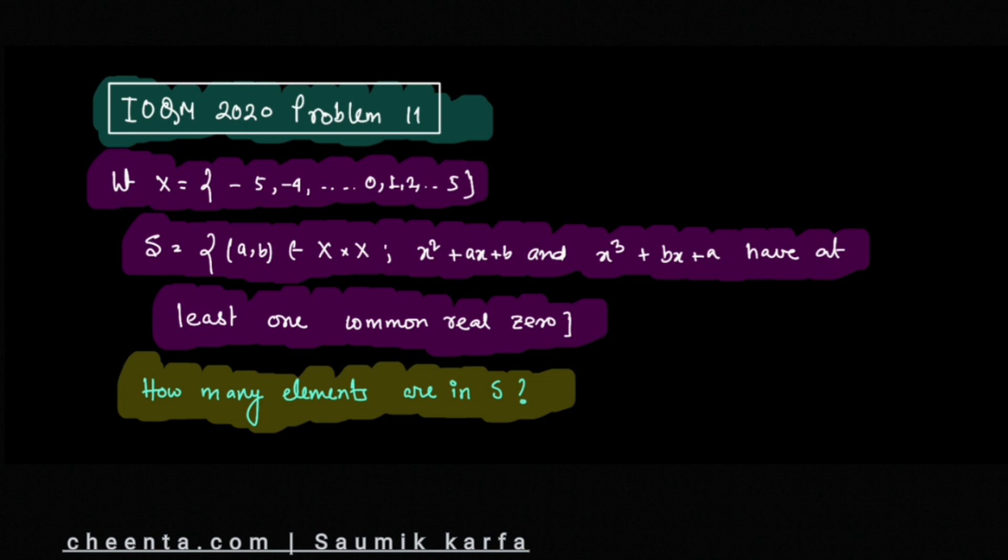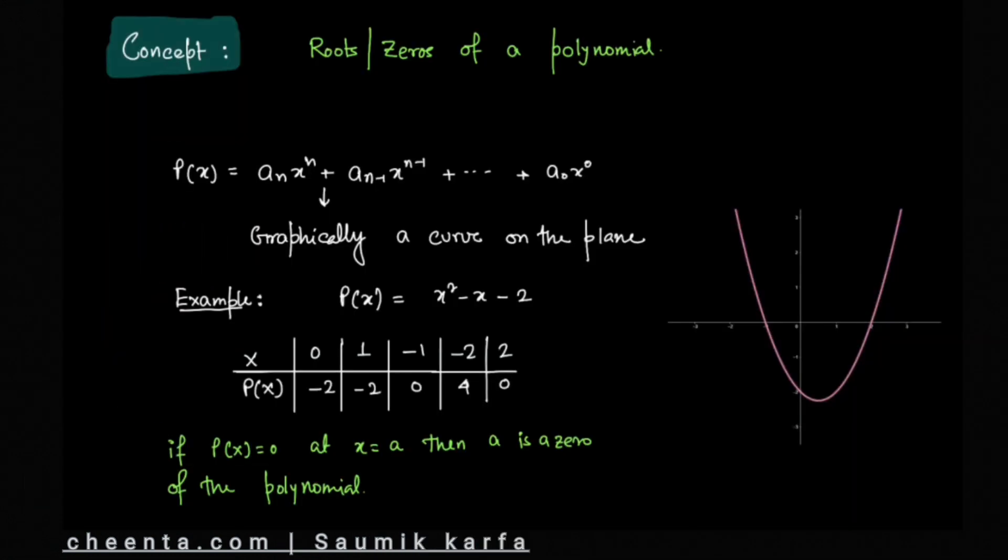Let us first understand polynomials and what is a zero of a polynomial. A polynomial is a mathematical expression of the form aₙxⁿ + aₙ₋₁xⁿ⁻¹ + ... + a₀x⁰. These coefficients aₙ, aₙ₋₁, ..., a₀ multiply the powers of x, and the highest power of the variable, which is n, is called the degree of that polynomial.